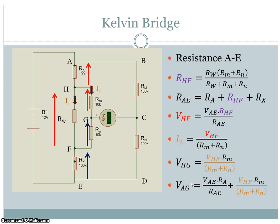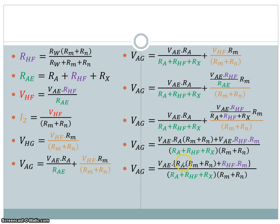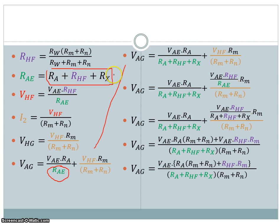The voltage from A to G is the current times RA plus the voltage from H to G. I have a number of equations here from the previous screen. The first thing done is to expand the resistance from A to E, then substitute for VHF. There's also RAE in the denominator, and with a common denominator for the two similar fractions, VAE is taken out to one side.